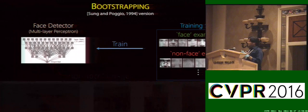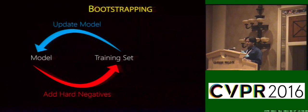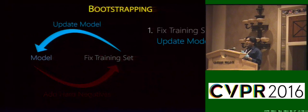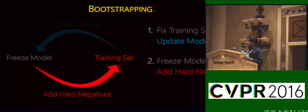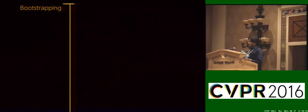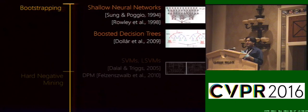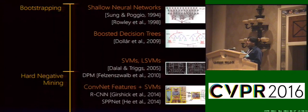Finally, use this new training set to retrain or update your model. This results in a very simple algorithm where we first fix the training set and train or update our model, then we freeze our model to find hard negatives to add to our training set, and we continue to do so iteratively. Forms of Bootstrapping have been widely used in object detection — systems ranging from shallow neural networks and boosted decision trees to training SVMs on HOG and ConvNet features.